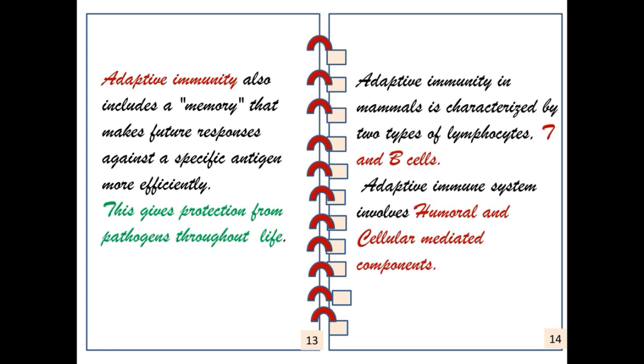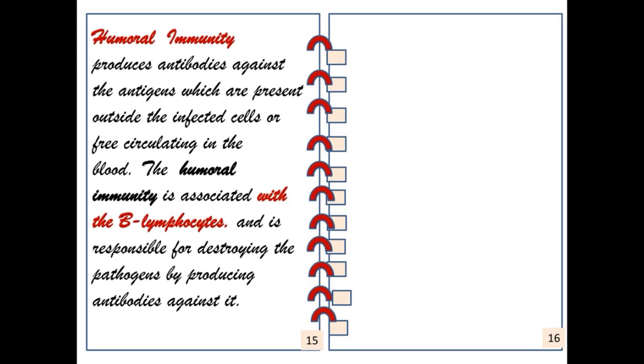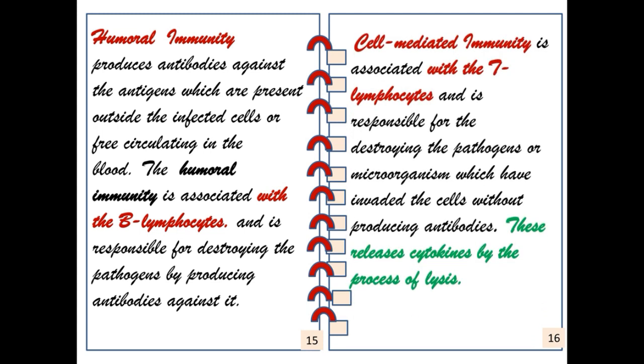Adaptive immunity is characterized by two types of lymphocytes: T cells and B cells. The adaptive immune system involves humoral and cellular-mediated components. Humoral immunity produces antibodies against antigens which are present outside the infected cells or free-circulating in the blood. It is associated with B lymphocytes. Cell-mediated immunity is associated with T lymphocytes and destroys pathogens or microorganisms which have invaded the cells without producing antibodies. These release cytokines by the process of lysis.